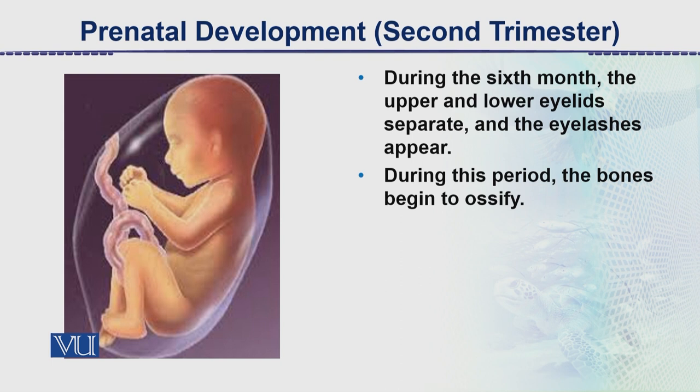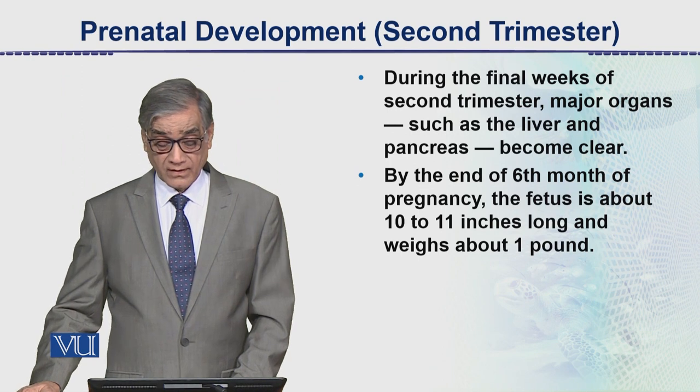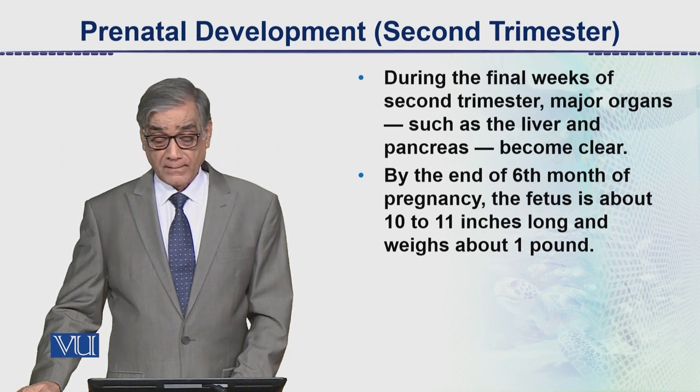During the second trimester, the baby takes shape — one can see the head and limbs developing. The baby is covered by the amnion membrane, inside which is amniotic fluid, providing an aquatic environment for the baby. If this amniotic fluid decreases in any form, it becomes problematic.